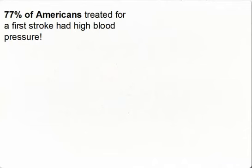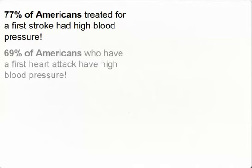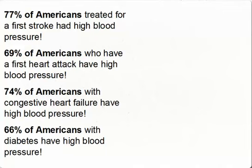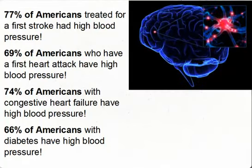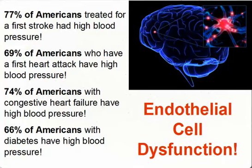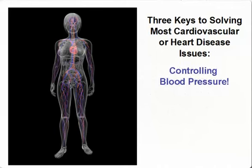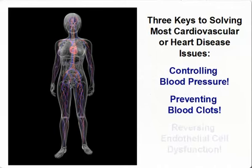Before we talk about some of the specific functions of nitric oxide, let's clearly identify three keys to solving most heart disease. 77% of Americans treated for a first stroke had high blood pressure. 69% of Americans who have a first heart attack have high blood pressure. 74% of Americans with congestive heart failure have high blood pressure. And 66% of Americans with diabetes have high blood pressure. High blood pressure is a common ailment of all four of these cardiovascular health issues. Additionally, a blood clot formation that lodges in a vascular artery is usually the reason for a stroke or heart attack. The vast majority of these diseases are a result of endothelial cell dysfunction. This helps us identify three keys: controlling blood pressure, preventing blood clots, and reversing endothelial cell dysfunction.